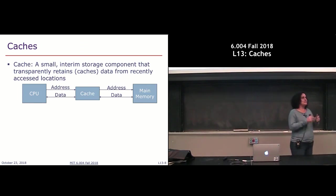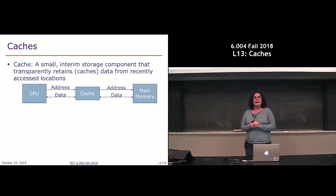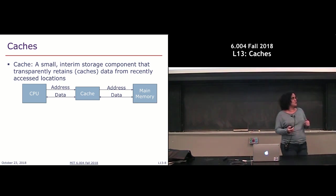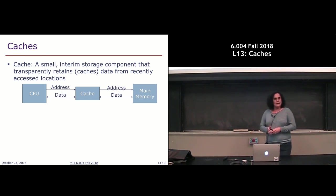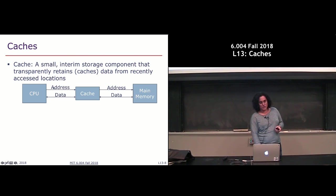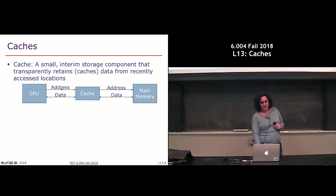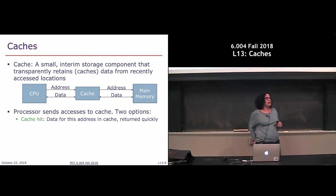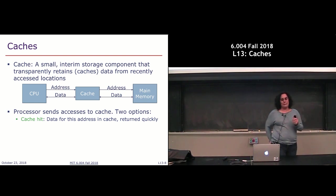We want to take advantage of spatial and temporal locality in determining what should live in our fast, smaller memories. This fast and small memory is called a cache — a small interim storage component that behind the scenes figures out what should live there to get the best performance. The CPU, as far as it's concerned, is just talking to one big memory, sending an address to look up in the cache. If the data is in the cache, we get a cache hit — the response comes back to the processor directly from the cache, very quickly.